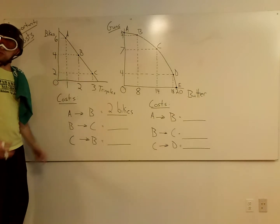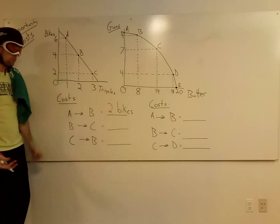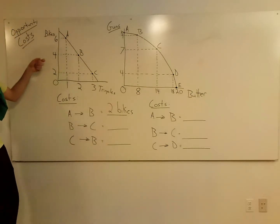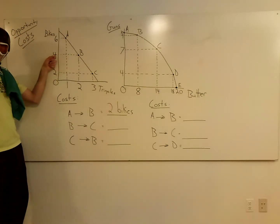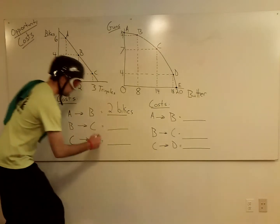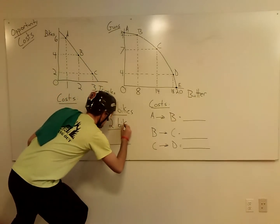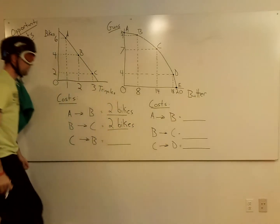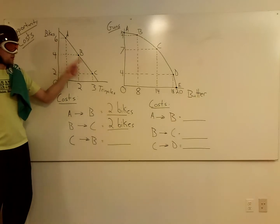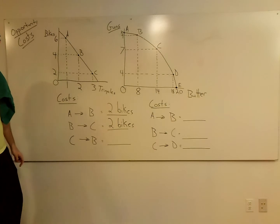Still making more tricycles, going from two to three, but we got to give something up. We got to give up some bikes here. Well we went from making four bikes, now we're making two bikes. So the answer is two bikes.